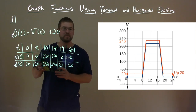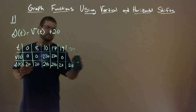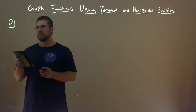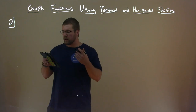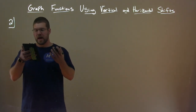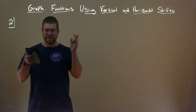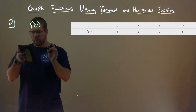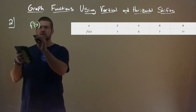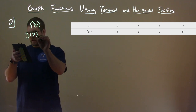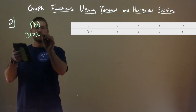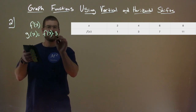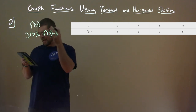Now we're going to look at shifting a tabular function vertically. We're given a function f of x given by a table, and we want to create a table for the function g of x equals f of x minus 3.